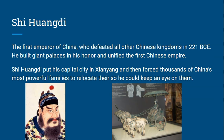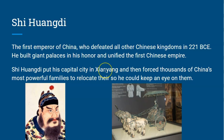Speaking of harsh and strict, Qin Shi Huangdi was the first emperor of China, who defeated all other Chinese kingdoms in 221 BCE. He built giant palaces in his honor and unified the first Chinese empire. Qin Shi Huangdi put his capital city in Xianyang and forced thousands of China's most powerful families to relocate so he could keep an eye on them.